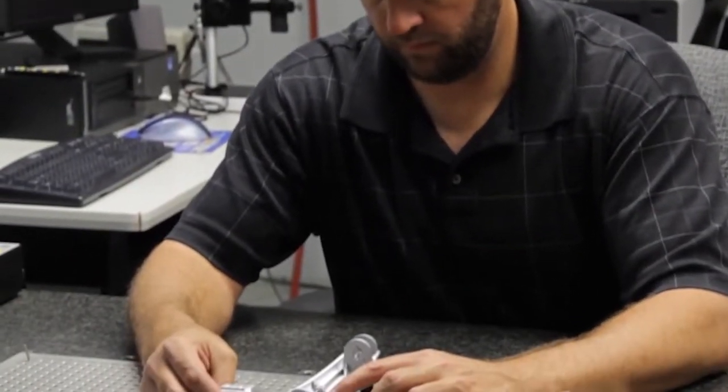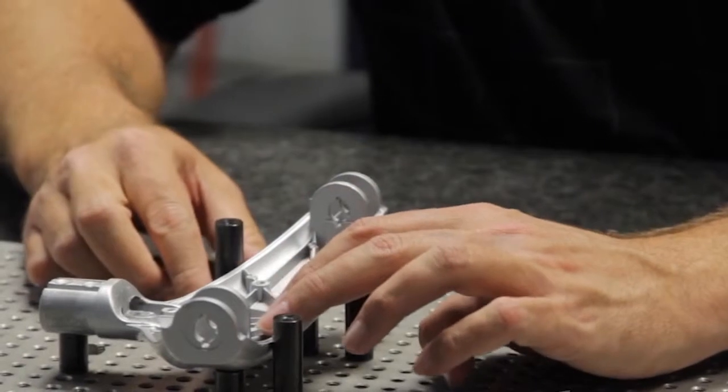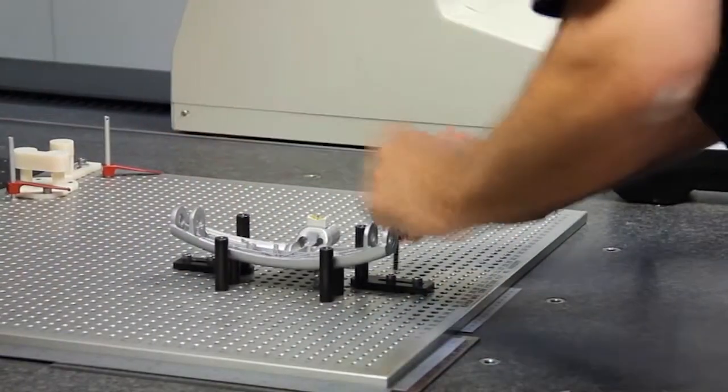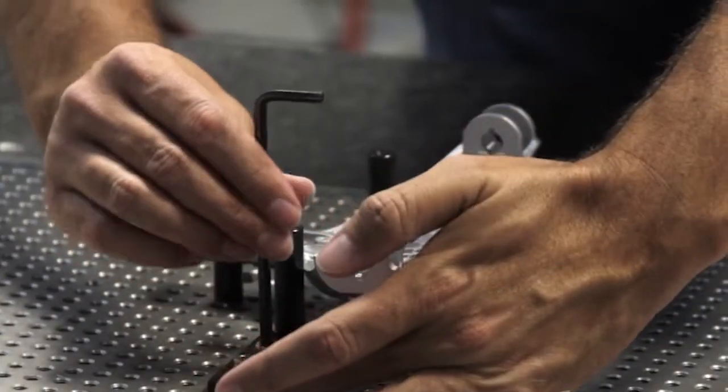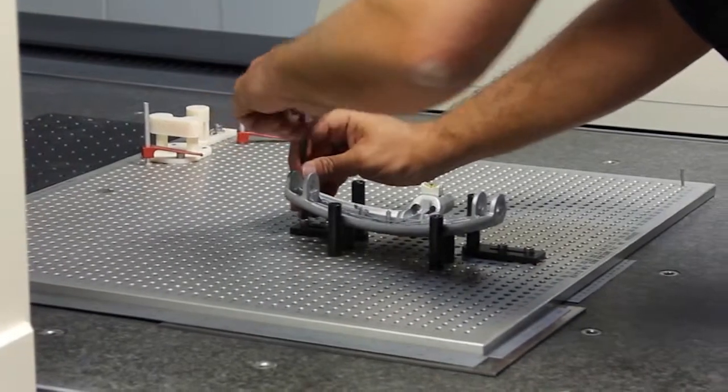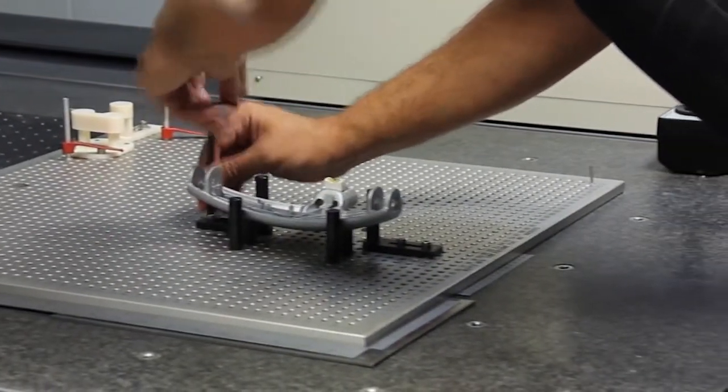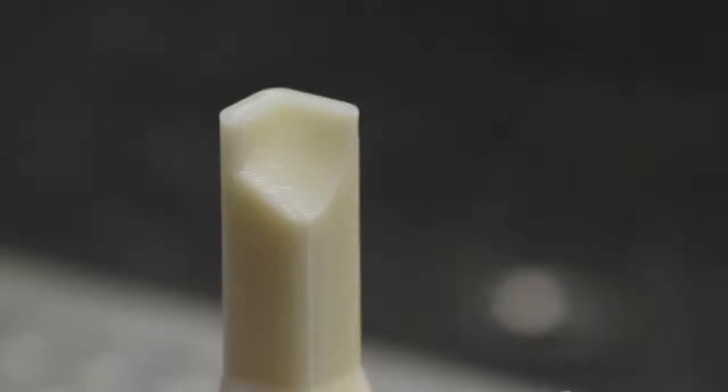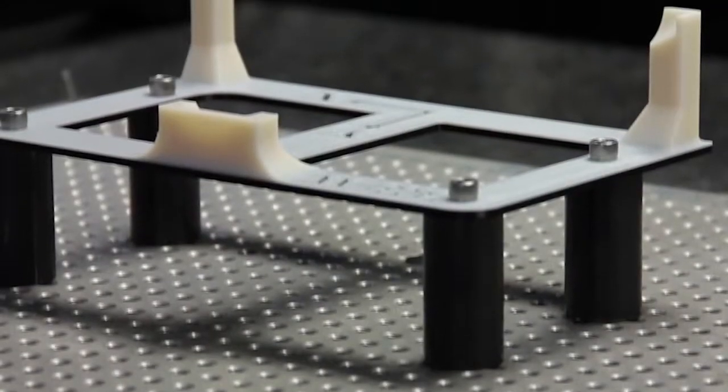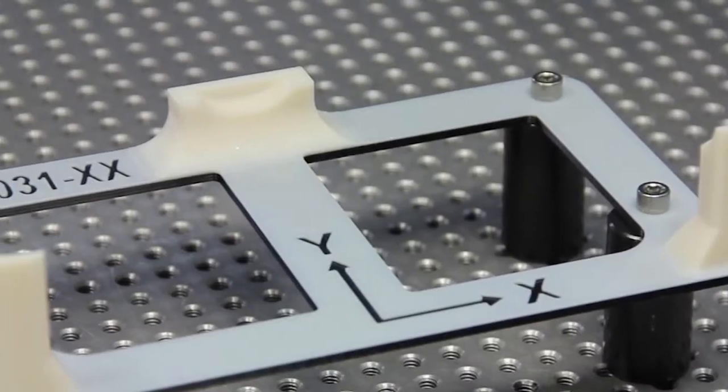With traditional measuring methods a lot of times we couldn't do any programming for the CMM to do first article inspection until the parts are actually made in the new mold. That could bleed up to well over a month of bottleneck, everybody just waiting on first article inspections.